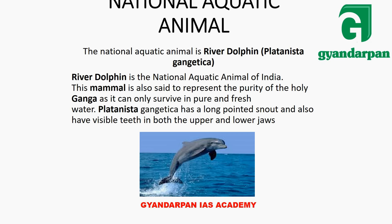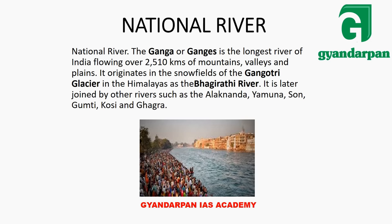The National Aquatic Animal is the Dolphin — specifically the Platanista gangetica (Ganga river dolphin). It helps purify the water of the Ganga river. The National River is the Ganga, which is the longest river of India. It meets with other rivers at Prayag.